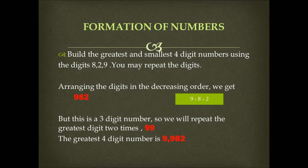Clearly, 9 is greater than 8, which is greater than 2. But this is a three-digit number. So we will repeat the greatest digit two times. The greatest digit is 9 and we will repeat it two times, writing it as 99. So the greatest four-digit number that will be formed is 9,982.